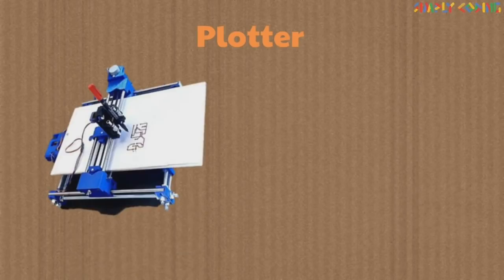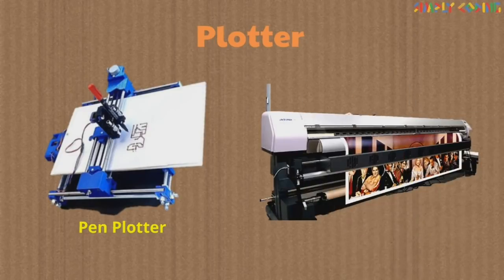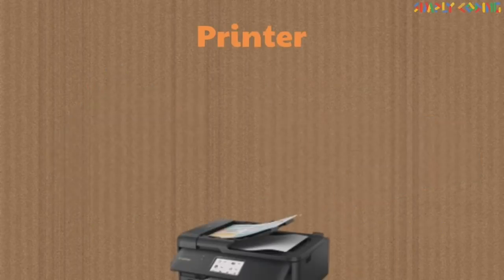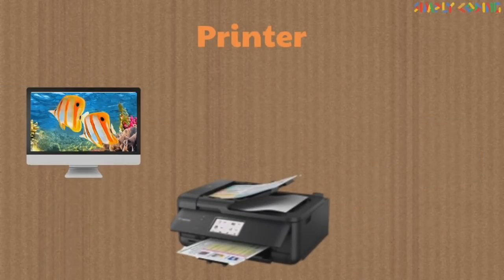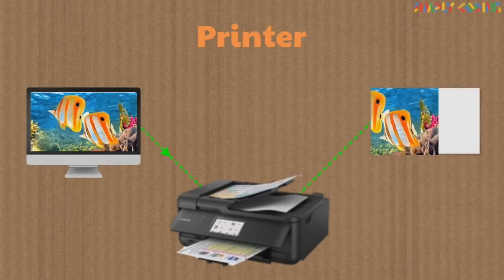A plotter is used to create drawings on paper. There are pen plotters, which are electromechanical devices that move on paper to create output. There are also photo plotters which use fiber optics technology to draw an image on paper.